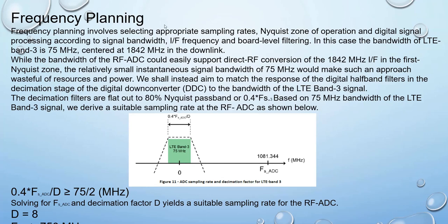For frequency planning, we select appropriate sampling rates in the correct Nyquist zone based on signal bandwidth, RF frequency, and board-level filtering. The bandwidth of LTE Band 3 is 75 MHz centered at 1842 MHz in the downlink. Rather than direct RF sampling at 1842 MHz, we aim to match the response of the digital half-band filters in the decimation stage to the LTE Band 3 bandwidth. The decimation filters are flat out to 80% of the Nyquist bandwidth, or 0.4 × Fs. Based on the 75 MHz bandwidth, we derive a suitable ADC sampling rate.